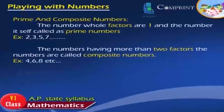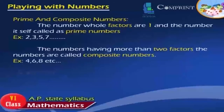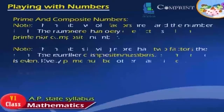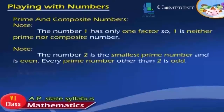Prime and Composite Numbers: Numbers that have only 1 and the number itself as factors are called prime numbers. Examples: 2, 3, 5, 7, and so on. Numbers having more than 2 factors are called composite numbers. Examples: 4, 6, 8, etc. Note: The number 1 has only one factor, so 1 is neither prime nor composite. The number 2 is the smallest prime number and is even; every prime number other than 2 is odd.